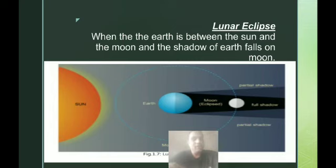There are two kinds of eclipses: lunar eclipse and solar eclipse. When the Earth is between the sun and the moon—when the sun, Earth, and moon come in a straight line and Earth is between sun and moon—and the shadow of Earth falls on the moon, it is known as lunar eclipse.